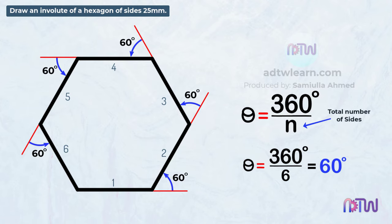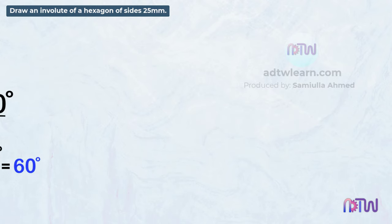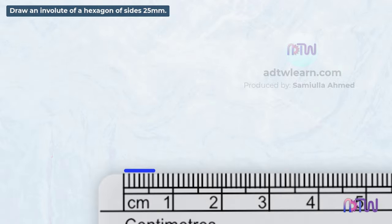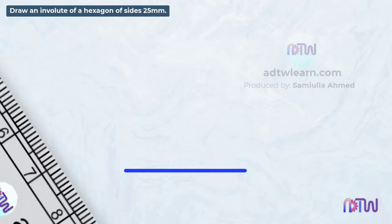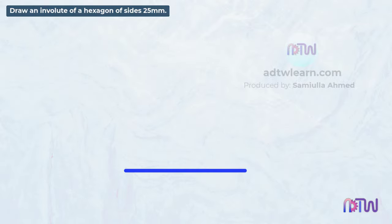Let's draw this hexagon. The length of all the sides is 25 millimeters. Take a ruler and draw a horizontal line having a length of 25 millimeters, or 2.5 centimeters. Name this line as 1 and 6.